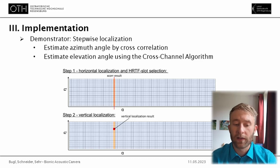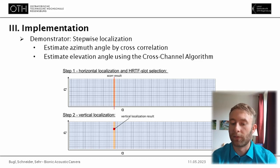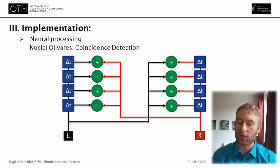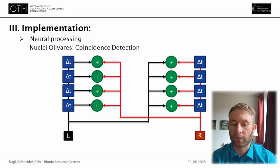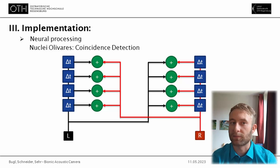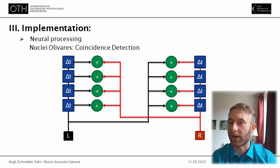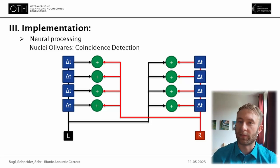For the demonstrator, the cross-channel algorithm was used to estimate the elevation angle after the azimuth angle had been detected by cross-correlation, and this was done to improve performance and enable real-time operation. Using cross-correlation was not a coincidence — there is a pun intended: in the neural structure of the nuclei olivares that processes binaural sound, there is a structure called coincidence detection, which is basically a neural implementation of cross-correlation. So it is very fitting to find the perfect algorithm already implemented in neurons.